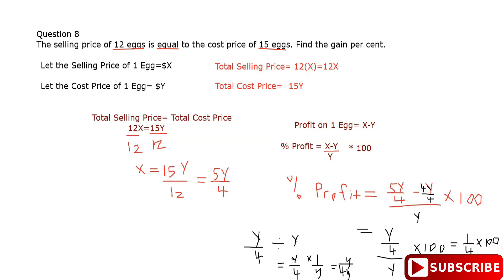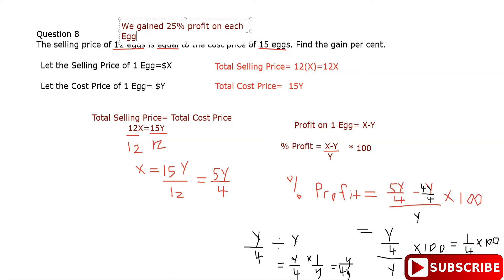The question asks us to find the gain percent. Therefore, we gained 25% profit on each egg.